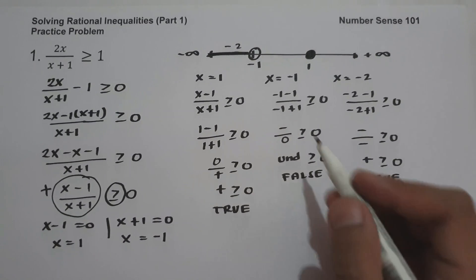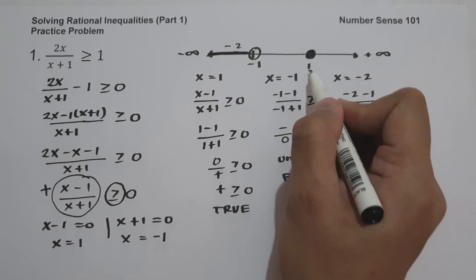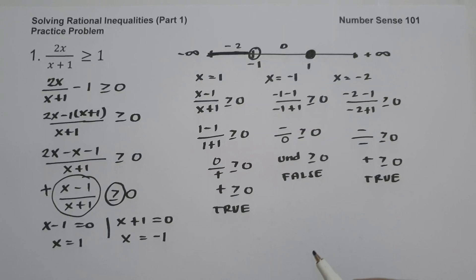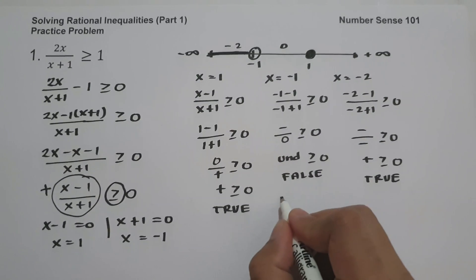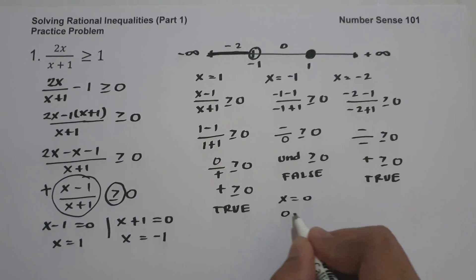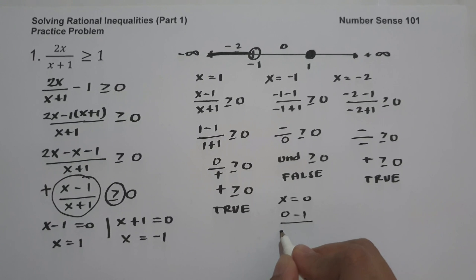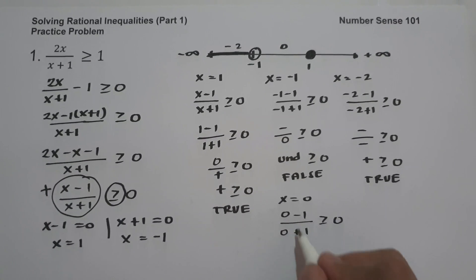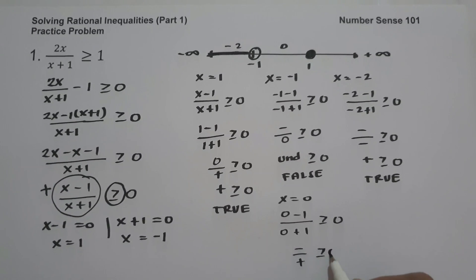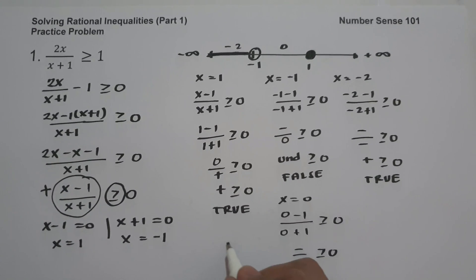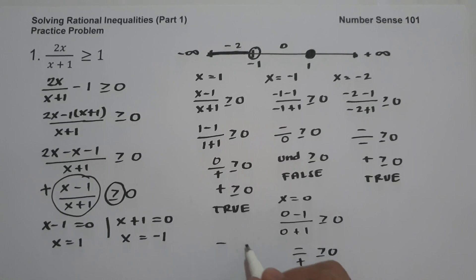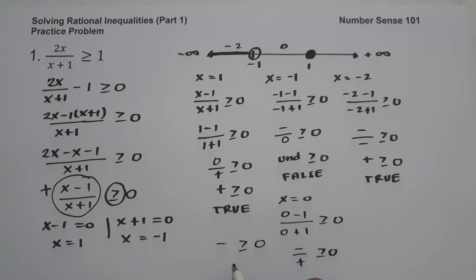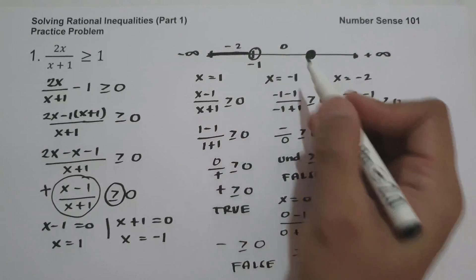Now let's test a number between negative 1 and 1, say x equals 0: 0 minus 1 over 0 plus 1 is negative over positive, which is negative. Negative is not greater than or equal to 0, so this is false. I'm not going to shade this region.